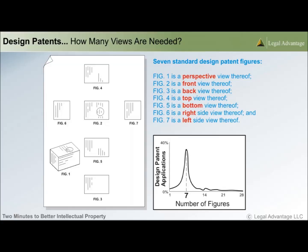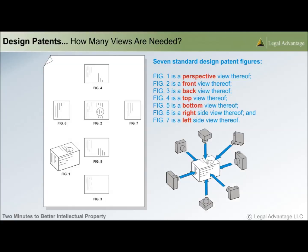The seven standard views are generated by imagining the object frozen in a block of ice, immobilized, and then walking around it to view it from the front, the back, the sides, and the top and bottom.